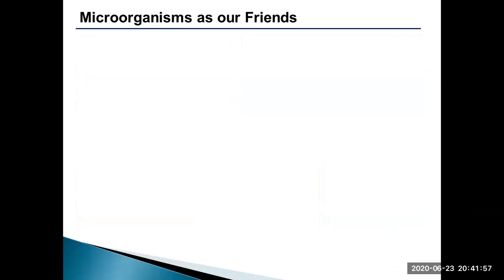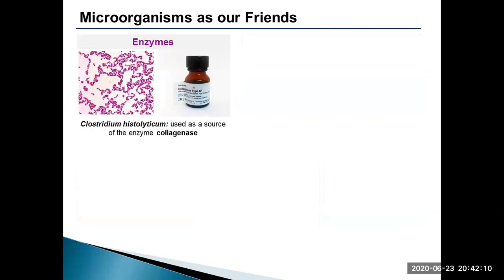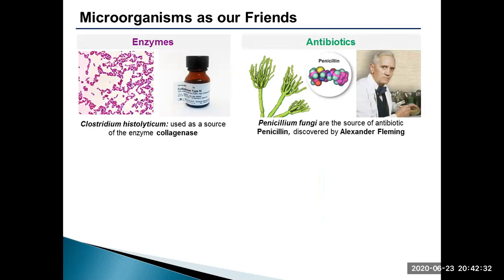Microorganisms have widespread application in pharmaceutical industries, which include enzymes, antibiotics, vaccines and probiotics. For example, collagenase enzyme is derived from Clostridium histolyticum. This enzyme is used to treat a disease in which the fingers bend towards the palm but cannot be straightened. A range of pathogenic conditions are treated with antibiotics produced from bacteria and fungi, for example, streptomycin, tetracycline, erythromycin, etc. The first antibiotic, penicillin, was discovered by British scientist Alexander Fleming in 1928 and is derived from Penicillium fungi.